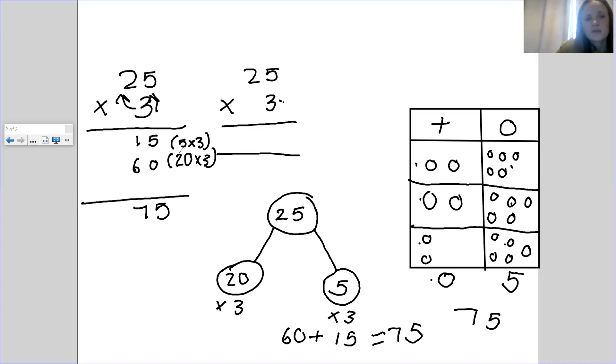And then this way is very similar to this one, but we're not showing these steps in the middle. So 5 times 3 is 15. So I'm going to put the 5 there and the 10 into the tens column. 20 times by three is 60. Plus the 10 that's there would make it 75.